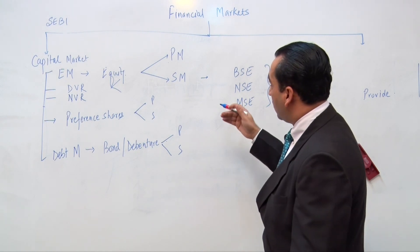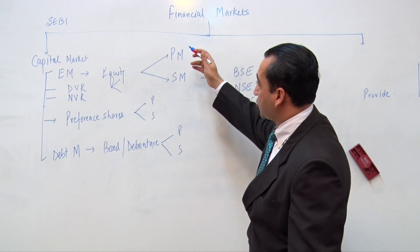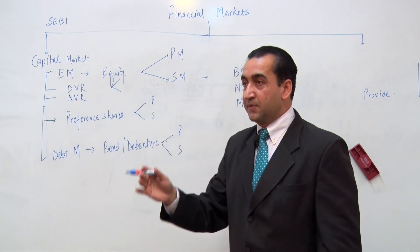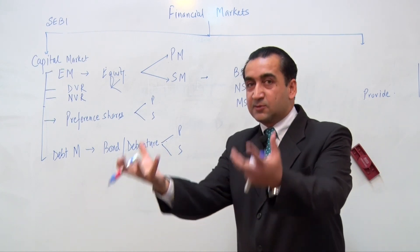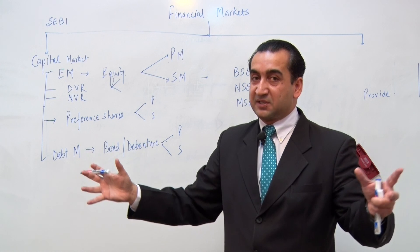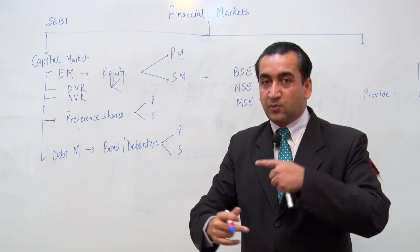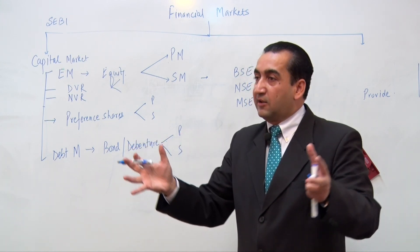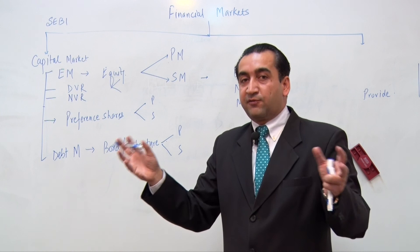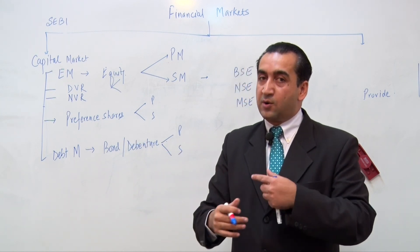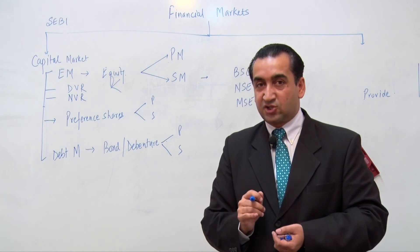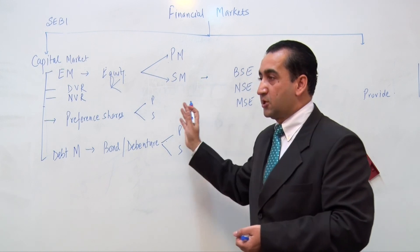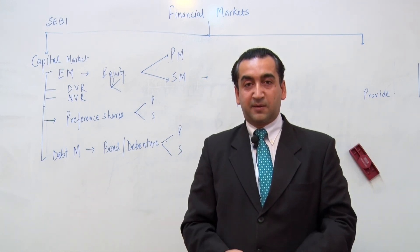In the next videos, we will open up the other segment or classification of financial market where the need is for short term. The company was able to raise money for long term, set up the plant machinery and business, but the business would not run without working capital. When the money is needed for short term, what are the various avenues available and what instruments are available in the financial system? In the next video, we will open up the market for short-term money, known as money markets. Thank you very much.